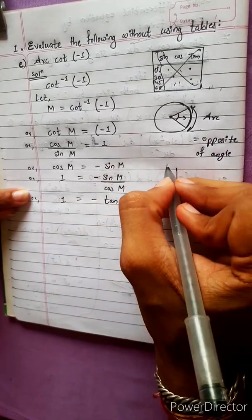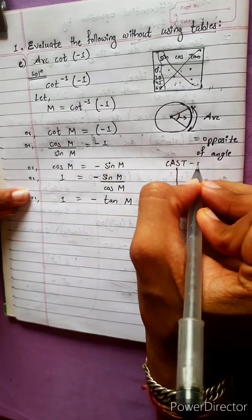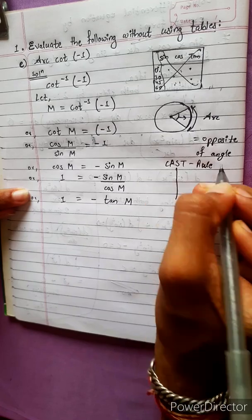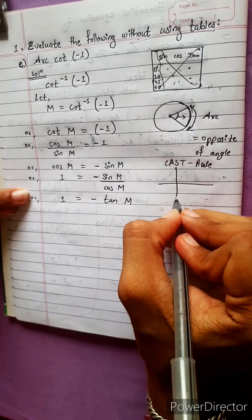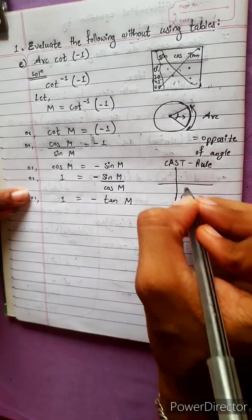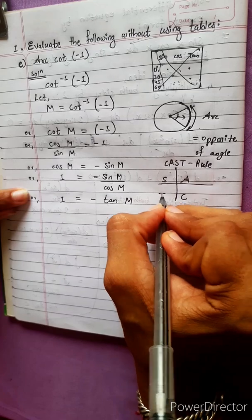Using the CAST rule — C, A, S, T — to determine which quadrant gives a negative tangent value.